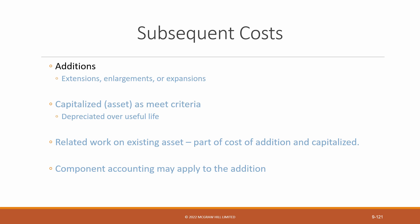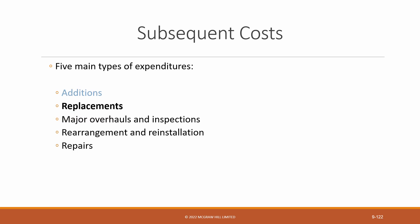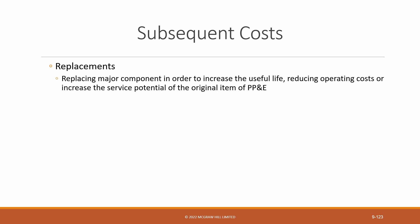That's it for additions. Pretty straightforward since they are often recorded as separate PP&E items under component accounting. Let's move on to replacements. Replacements are when an entity removes an original component or part from an old asset and replaces it with a new component or part. It's often because the entity has a policy of modernizing or updating an original asset. Replacing a major part or component of an item of PP&E is sometimes referred to as a betterment, because the replacement makes the original asset better in some way, either by extending its useful life, reducing operating costs, or improving its efficiency or effectiveness, meaning it's increasing the original asset's service potential.